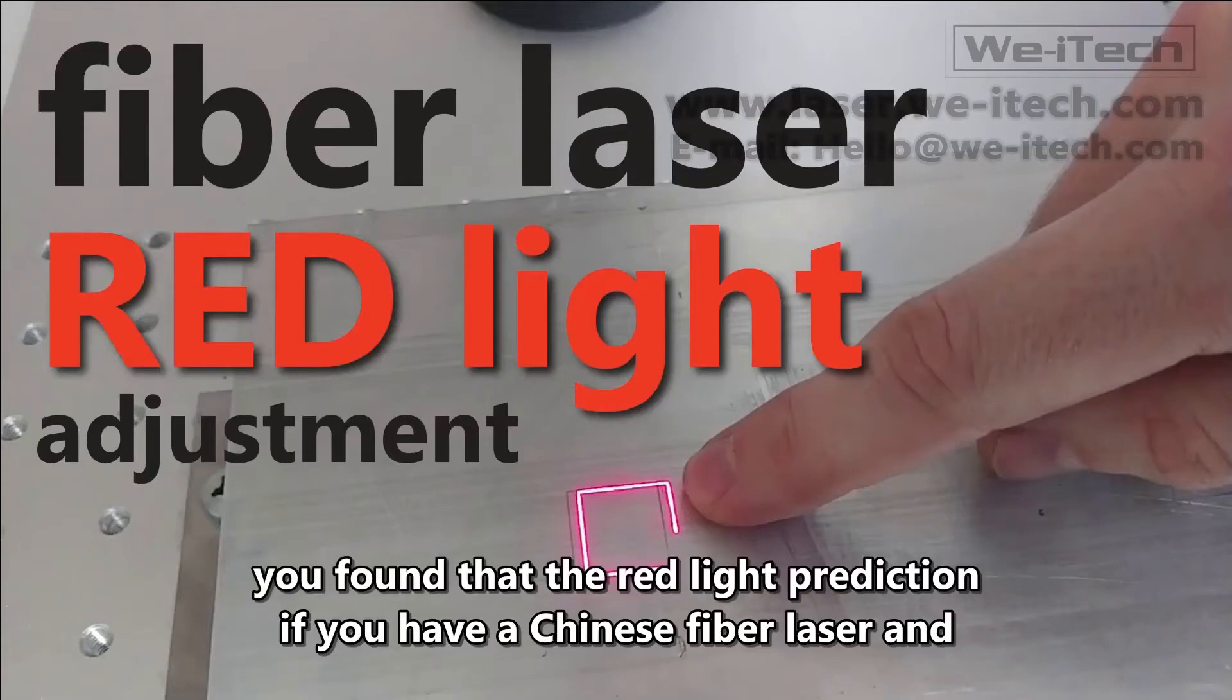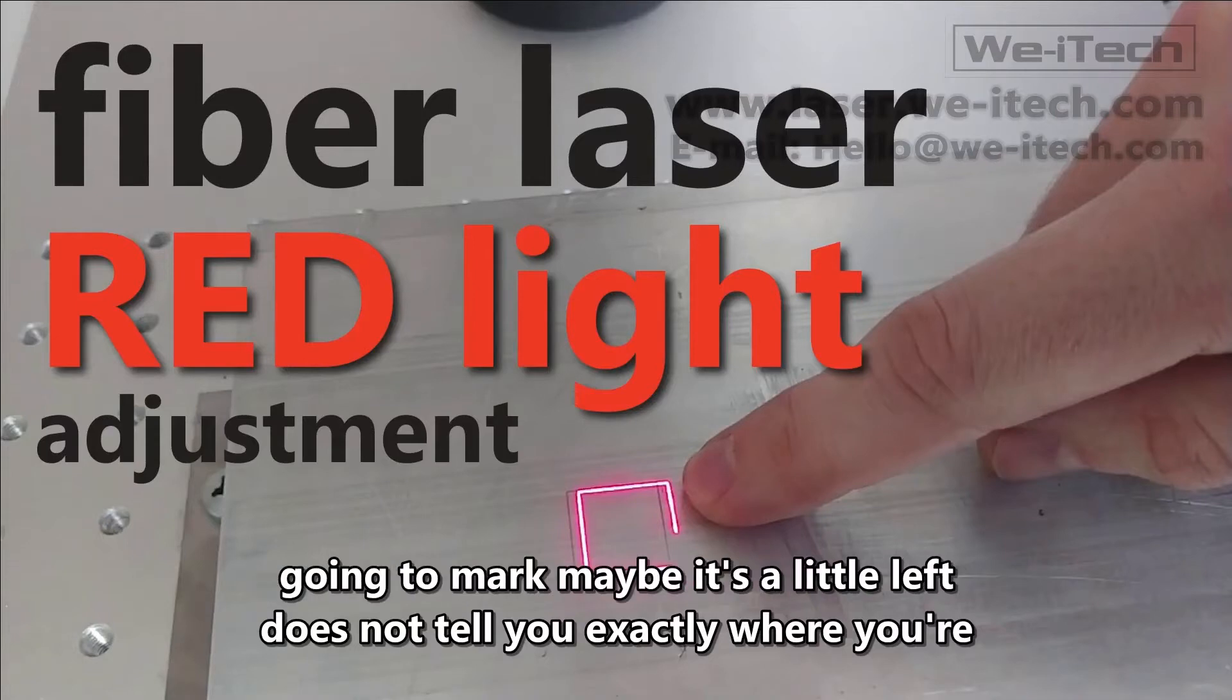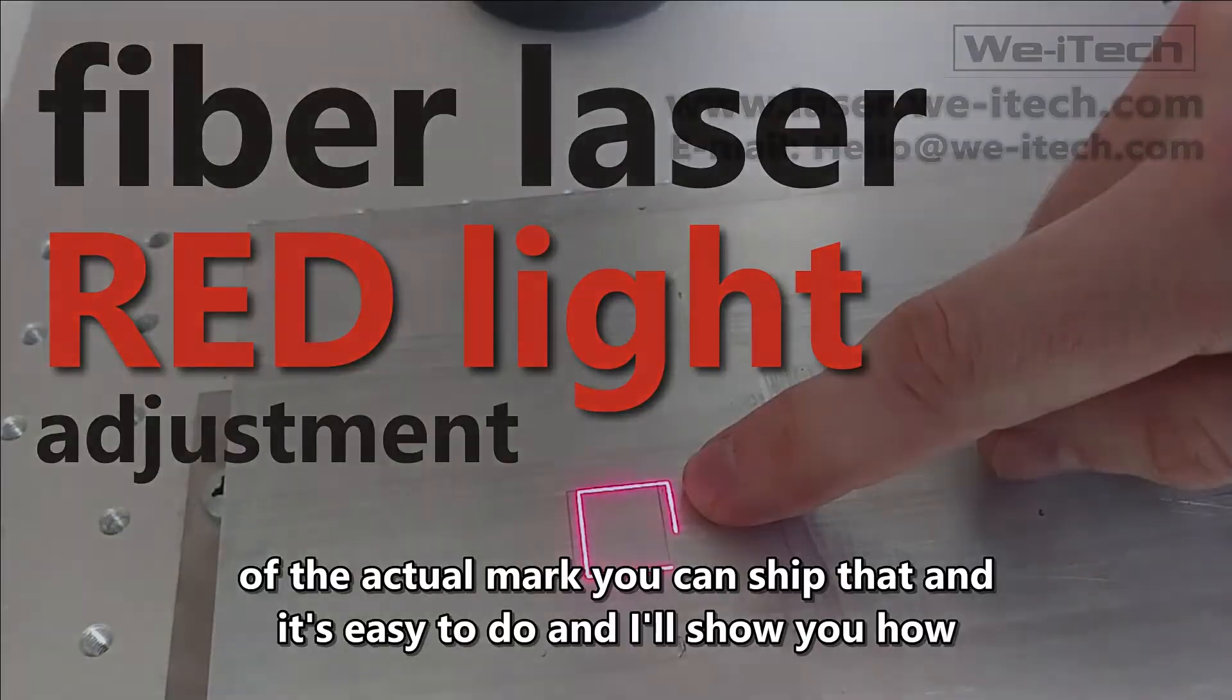If you have a Chinese fiber laser and you found that the red light prediction does not tell you exactly where you're going to mark, maybe it's a little left, right, up, or down of the actual mark, you can shift that and it's easy to do. I'll show you how.